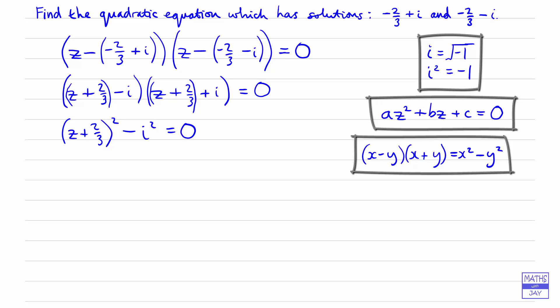So then multiplying out the bracket we've got z squared, two lots of two-thirds of z so plus four-thirds z, and then two-thirds all squared so that's plus four-ninths. And then remember we know that i squared is negative one, so we're subtracting negative one, in other words adding on one. So we can take together the last two terms. So the z squared and the four-thirds of z aren't going to change at the moment, and one plus four-ninths, well that will be, well one is nine-ninths, so that will be thirteen-ninths.